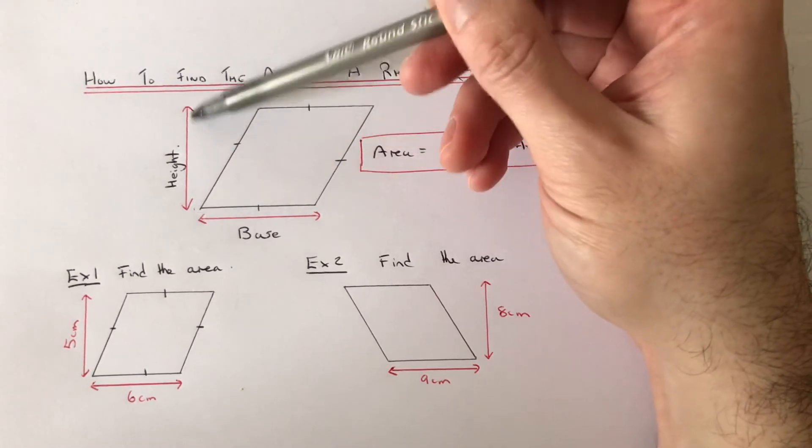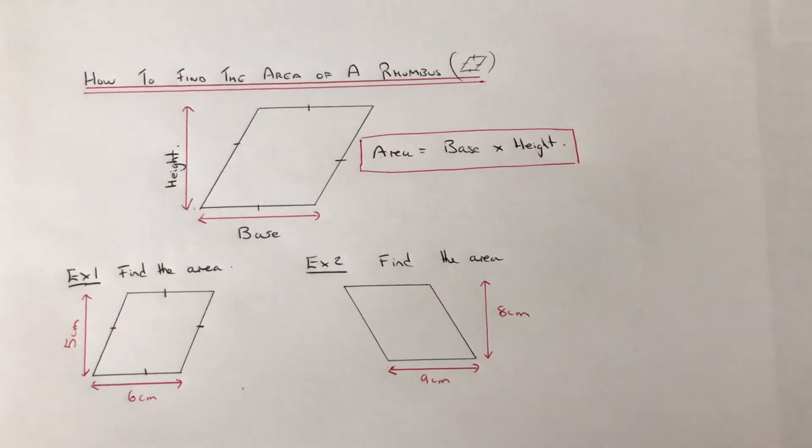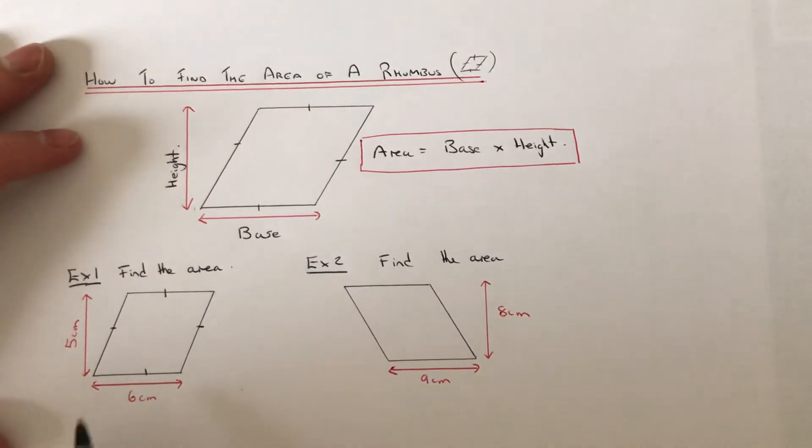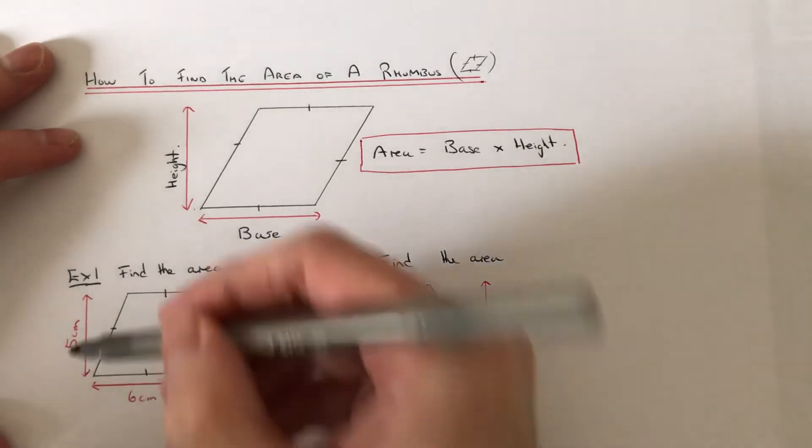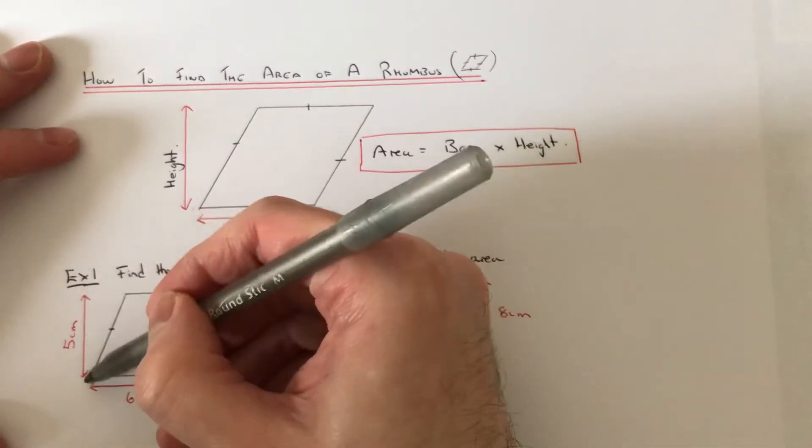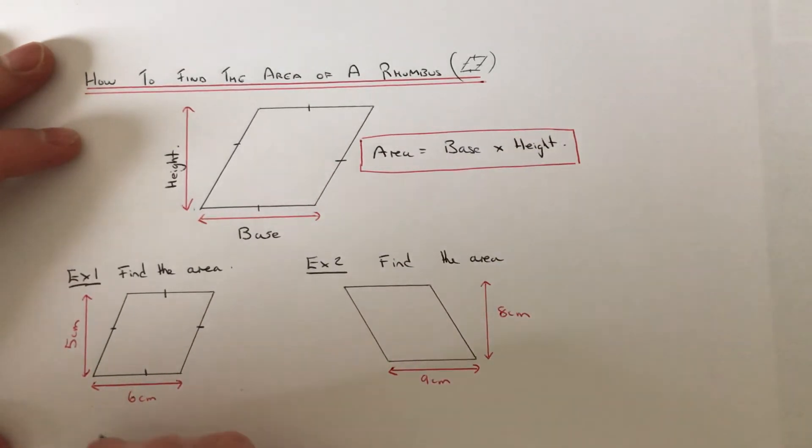So let's have a look at example 1. We've got a base length of 6 and a perpendicular height of 5. So to work out the area we just multiply the 6 by the 5, which gives us 30 centimeters squared. Let's move to example 2 then.